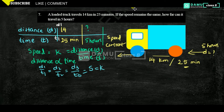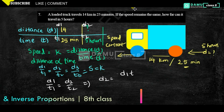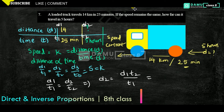Taking d1 by t1 equals d2 by t2, we need to find d2. So d2 equals d1 times t2 divided by t1. Here d1 is 14 kilometers, t2 is 5 hours, and t1 is 25 minutes.